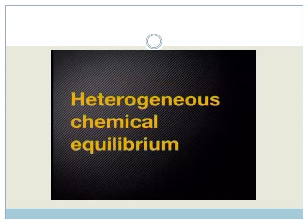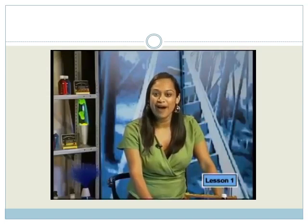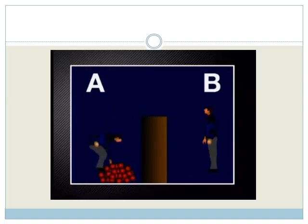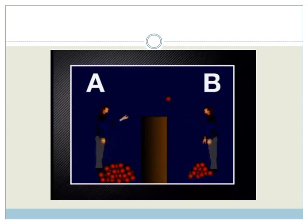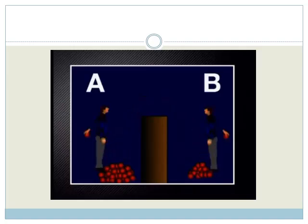Many learners find it hard to understand what it means to have the rate of the forward reaction equal to the rate of the reverse reaction. Think of the forward reaction as man A throwing apples over his neighbor's wall. At first, only man A throws apples because man B has none to throw back. Eventually, man B starts throwing apples back — that represents the reverse reaction. At first man B is slow, but he speeds up. Man A and man B end up throwing apples at the same rate, and the number of apples on each side stays the same. We say they are in dynamic equilibrium.